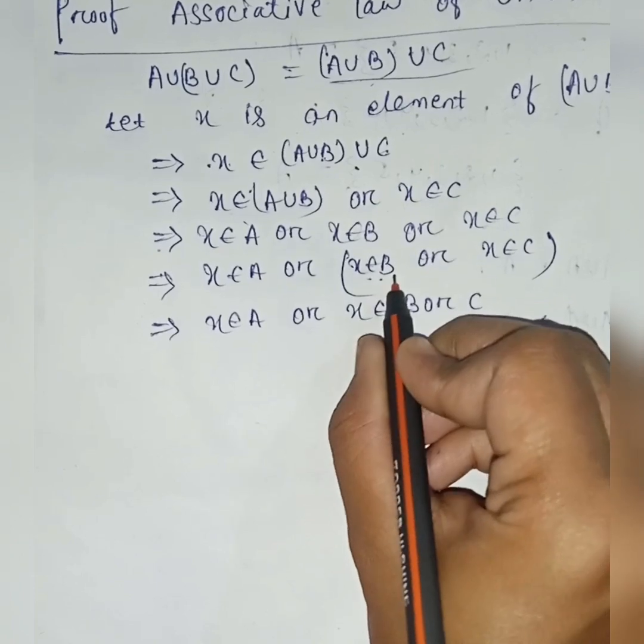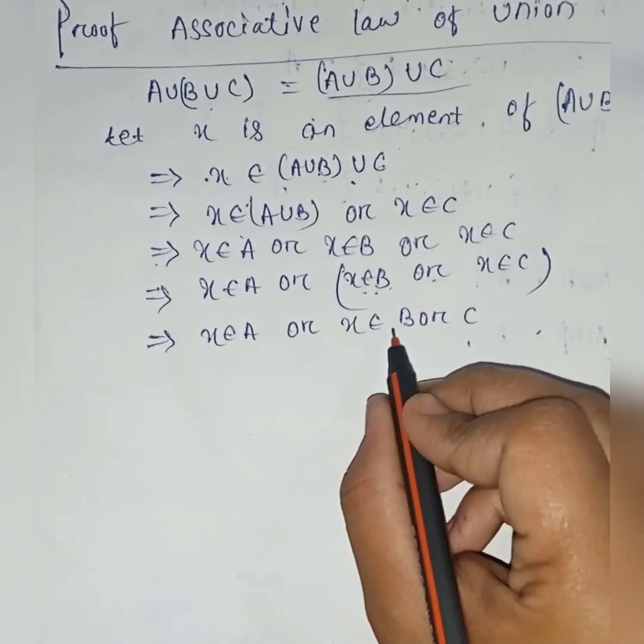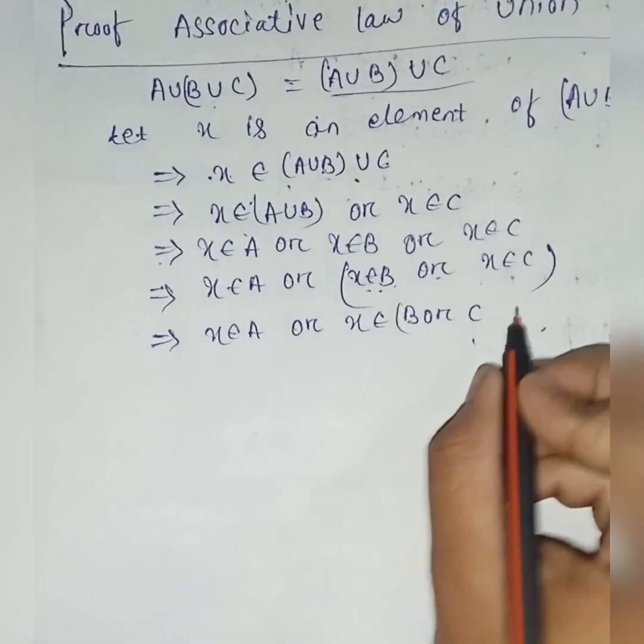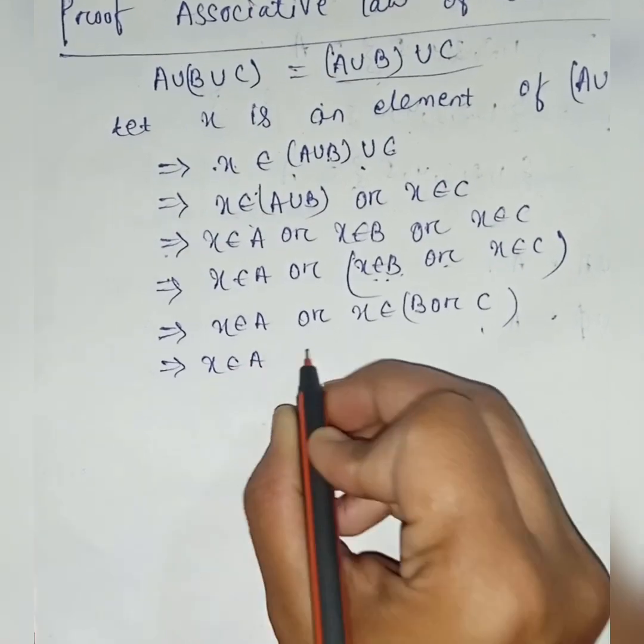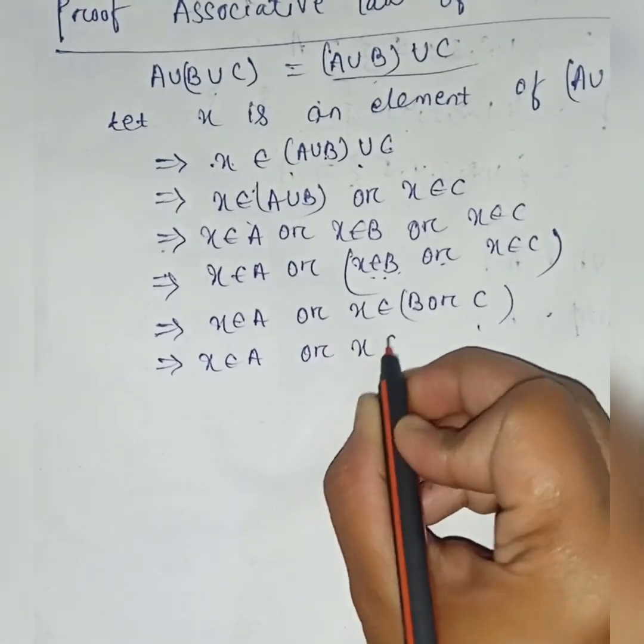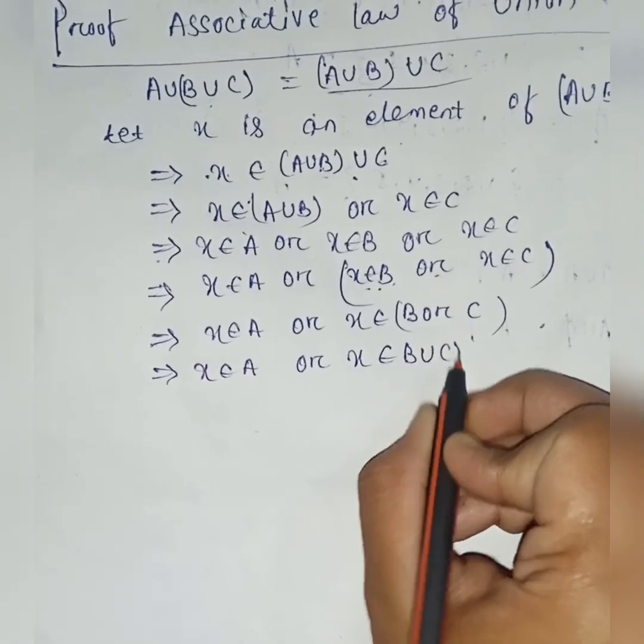Then we can take common x belongs to B and x belongs to C, which we can write as x belongs to B union C.